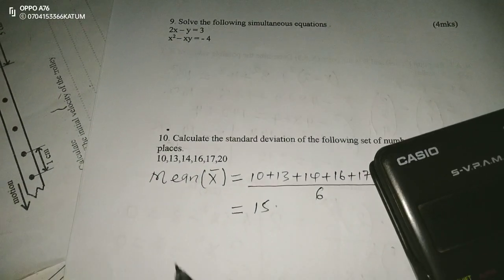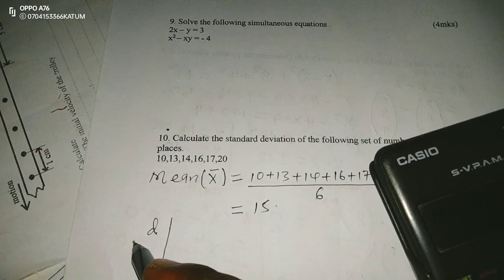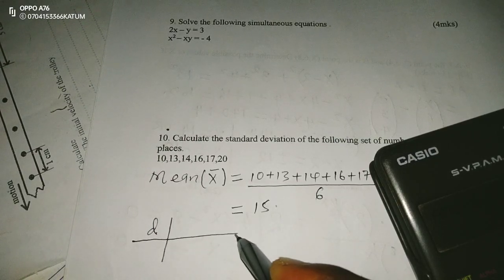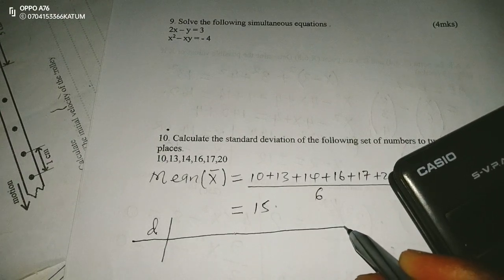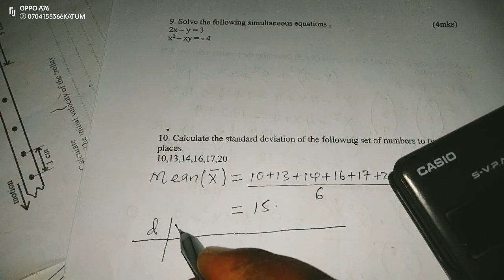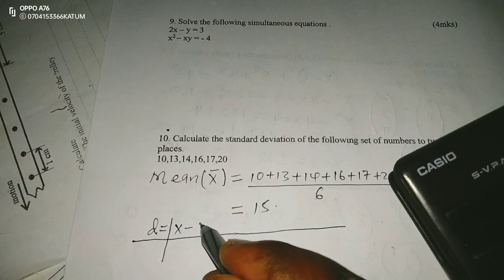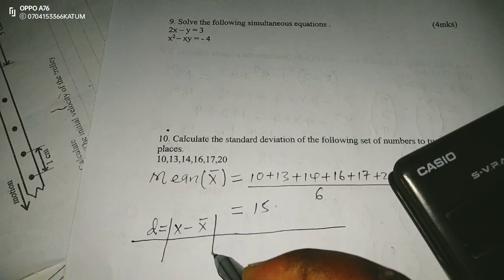The other thing I should get now is deviation of all the numbers. Deviation of all the numbers from the mean. Therefore, when I take every number, deviation is given by every number minus the mean score.